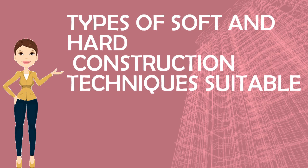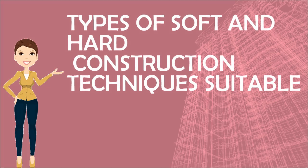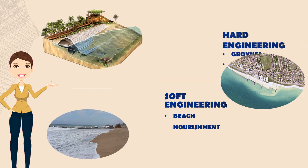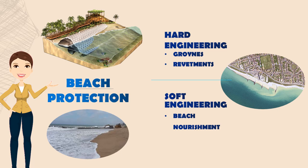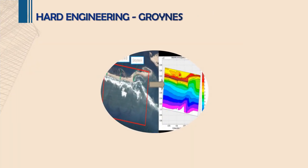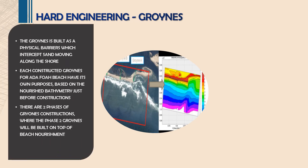The beach protection technique used in Ada Foie consists of both hard and soft engineering. For hard engineering, the engineers decided to use groins and revetments, complemented with soft engineering techniques. The groin is built as a physical barrier which intercepts sediment moving along the shore. There are two phases of groin construction, where the phase two groin will be built on top of beach nourishment.